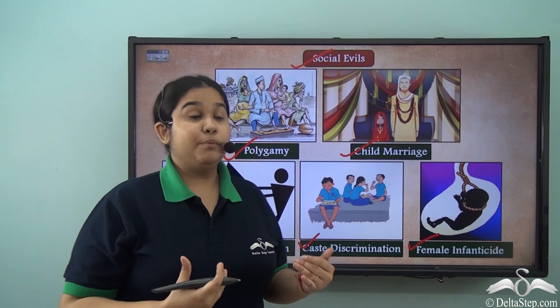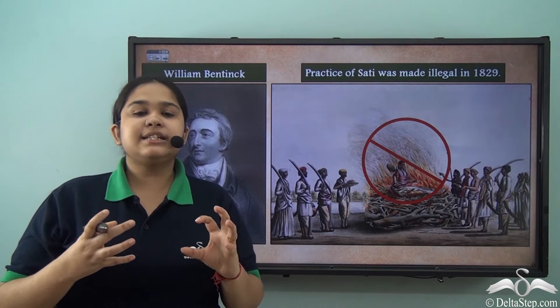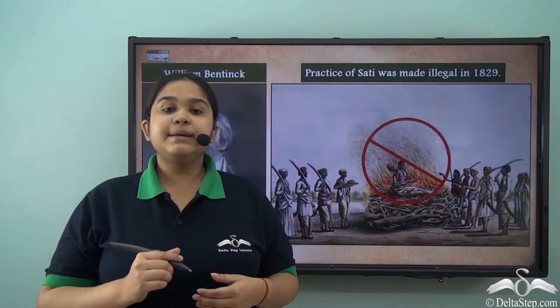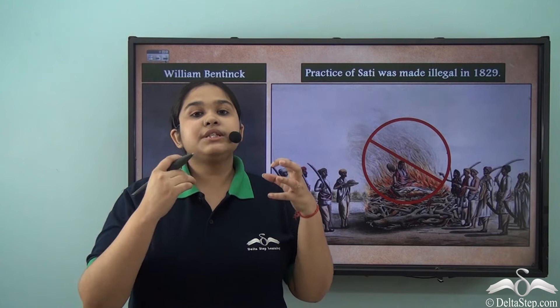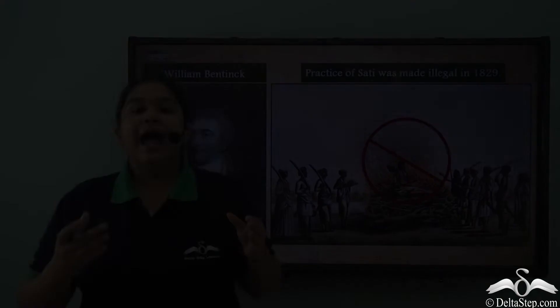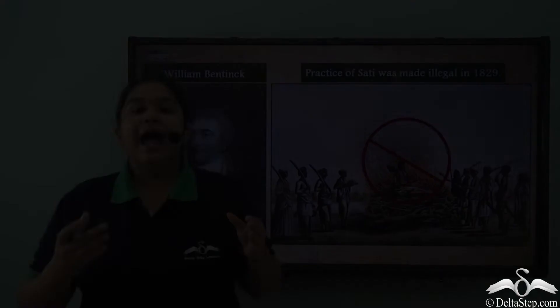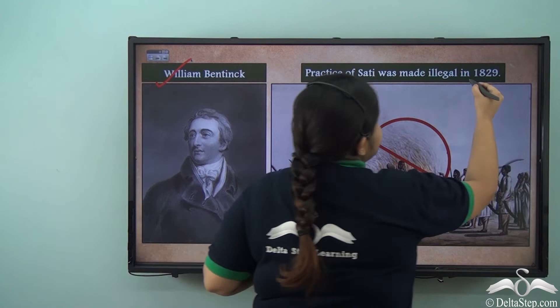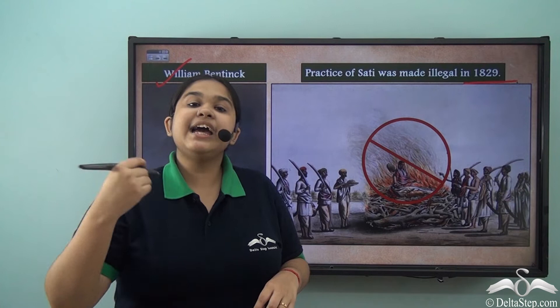The biggest input that Brahmosamaj gave in changing the situation was their win against the practice of sati. Brahmosamaj ardently propagated that sati should not be observed as a ritual, and this was also supported by the British. When William Bentinck issued the anti-sati act and made sati illegal in 1829, it became a victory for Brahmosamaj as well as for the ideas of Raja Ram Mohan Roy.